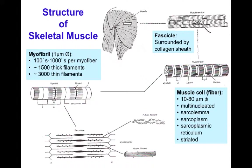Intermediate filaments connect across the thick filaments to keep them aligned. The thin filaments join end-to-end at a structure called the Z disc, which has many proteins including signaling and cytoskeletal molecules. The largest single protein in the body, called titin, connects at the Z disc, then along the thin filament, and across to the thick filament, providing resting elasticity.